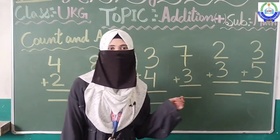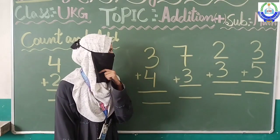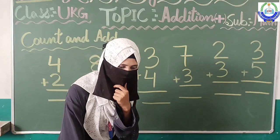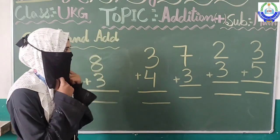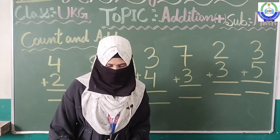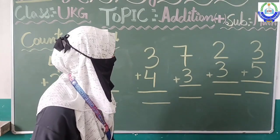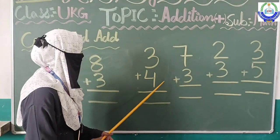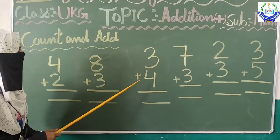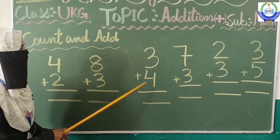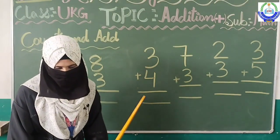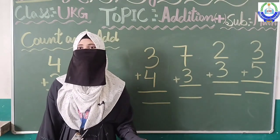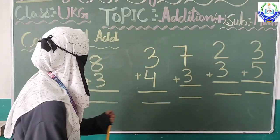Ab hum logon ne kuch pictures banai thi board pe, uske zariye hum logon ne seekha ki kis tarah addition karke uske baad hum add karte hain. Ab hum log kuch numbers likhenge board pe aur seekhenge ki kis tarah addition ko numbers ke saath karke hum add karenge. So now we are going to start addition with one digit. Let's start.